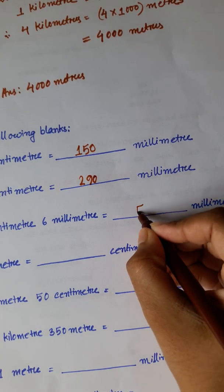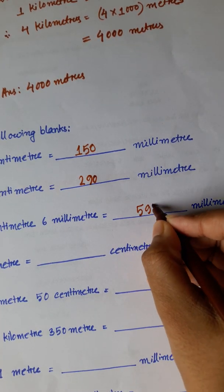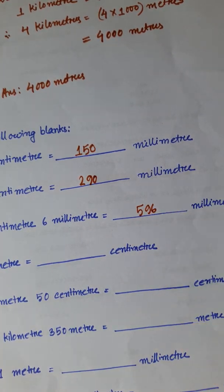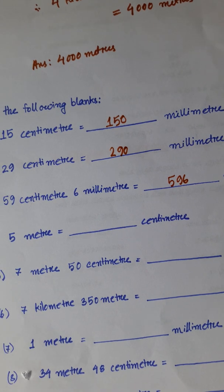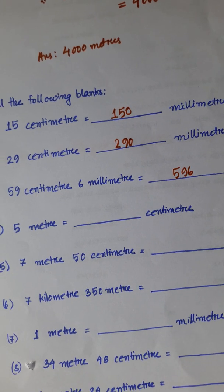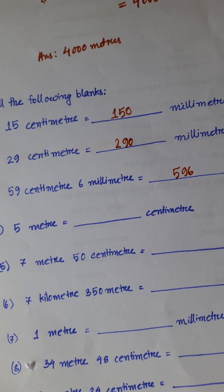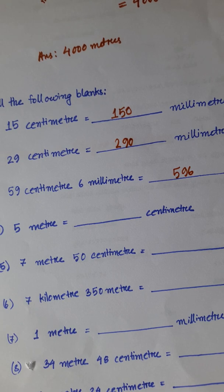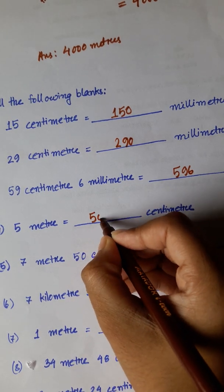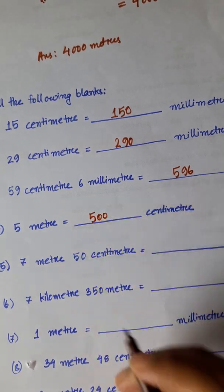Next: 5 meters is equal to dash centimeters. 1 meter is equal to 100 centimeters, so 5 meters is equal to 100 into 5, which is 500 centimeters.